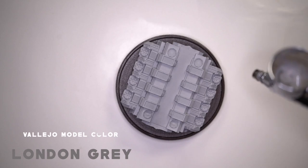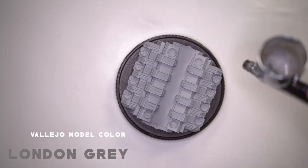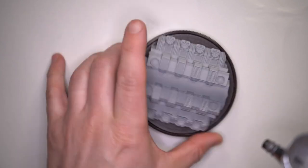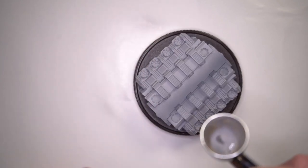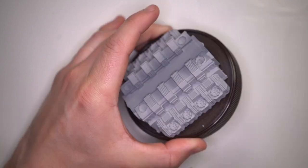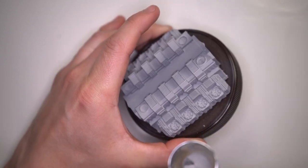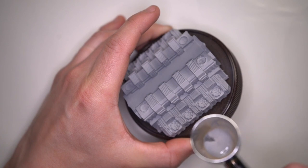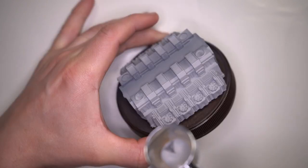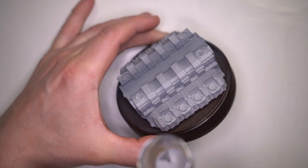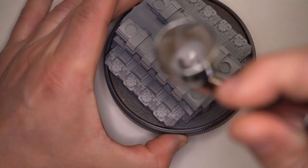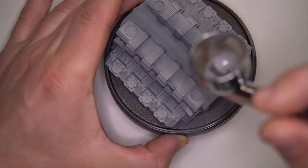I mixed up some Vallejo model colour London grey, and I made sure that I focused in on all the areas where logically dust and dirt would accumulate over decades of this Manufactorum sitting in my hive city. So I'm not really focusing too much over the entire model, just areas where I think that things should be darker. And anyway, we're going to be highlighting things doing oil washes later. So this is really just to set the tone a little bit, add some variation without going too crazy too early on.